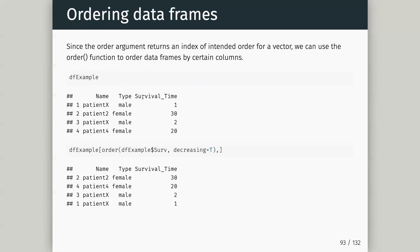The order function becomes really useful with data frames. If I want to reorder my data frame by those who lived longest after cancer treatment, I pass the order to the row indices and say order by the survival column with decreasing equals TRUE — from highest to lowest — and it orders my data frame by row using that column.